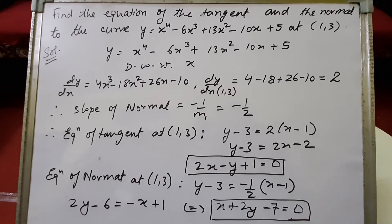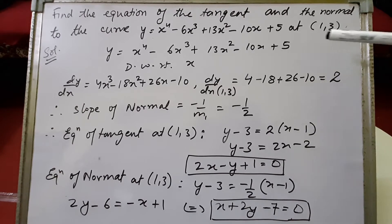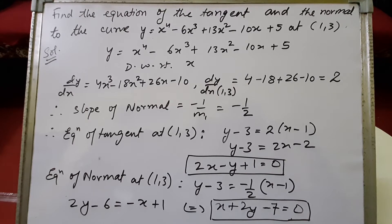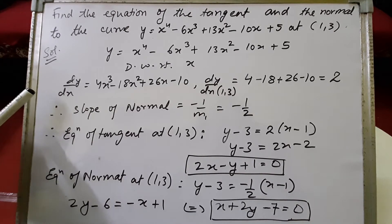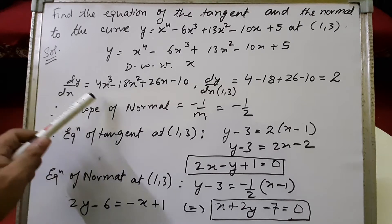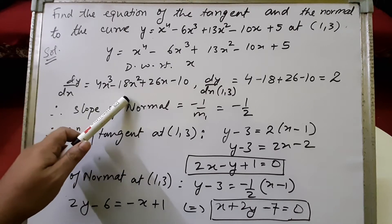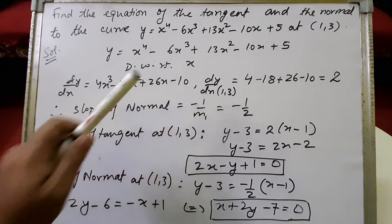The equation of the curve is given as y equals x to the power 4 minus 6x cubed plus 13x squared minus 10x plus 5. For finding the slope, we'll differentiate this equation to find the value of dy/dx. When we differentiate with respect to x, we'll get dy/dx equals 4x cubed minus 18x squared plus 26x minus 10.